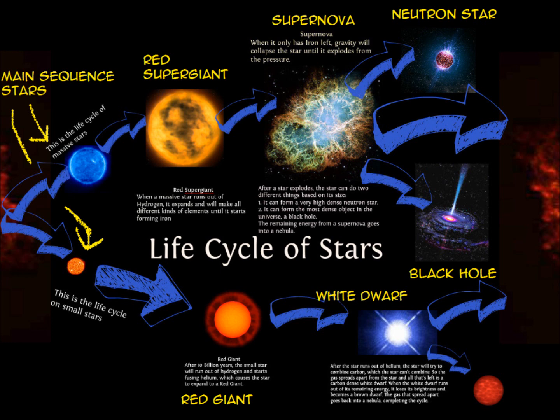Red super giants do have enough mass to increase the pressure and temperature of the core enough to fuse larger nuclei. Each time an element is depleted, the core shrinks until it is hot enough that there is a high enough pressure for further fusion to occur. This continues until most of the core is fused into iron.